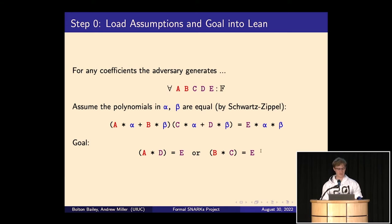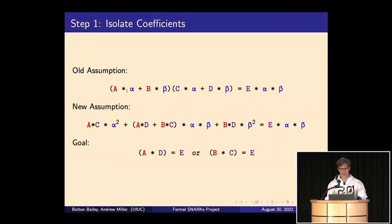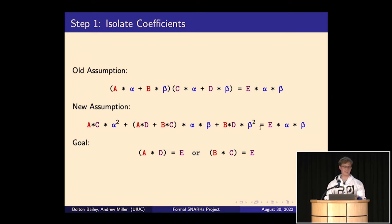The first step in the automatic proof is to isolate the coefficients and put things in normal form. Recall the FOIL rule: A*alpha + B*beta times C*alpha + D*beta equals A*C*alpha² + (A*D + B*C)*alpha*beta + B*D*beta². That equals E*alpha*beta. This new normal form can be carried out by MathLib tactics that put ring expressions into normal form.